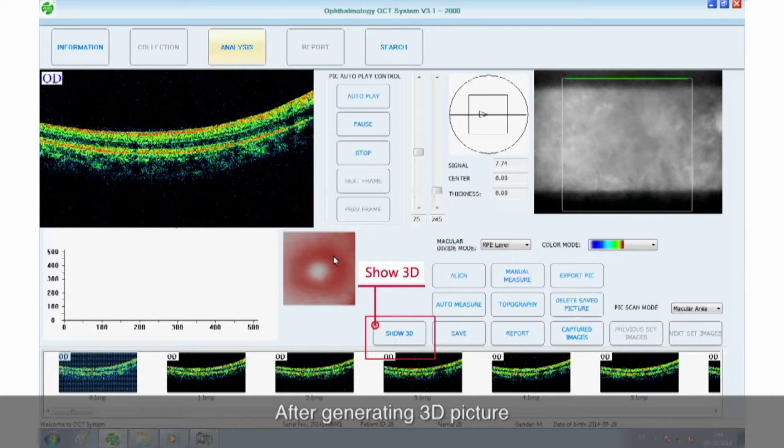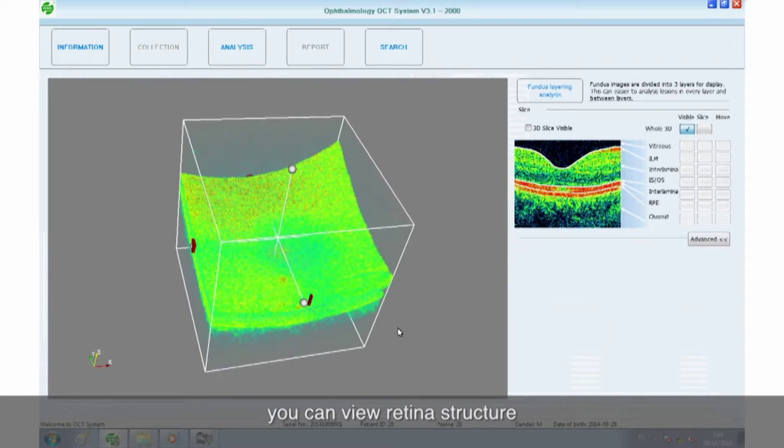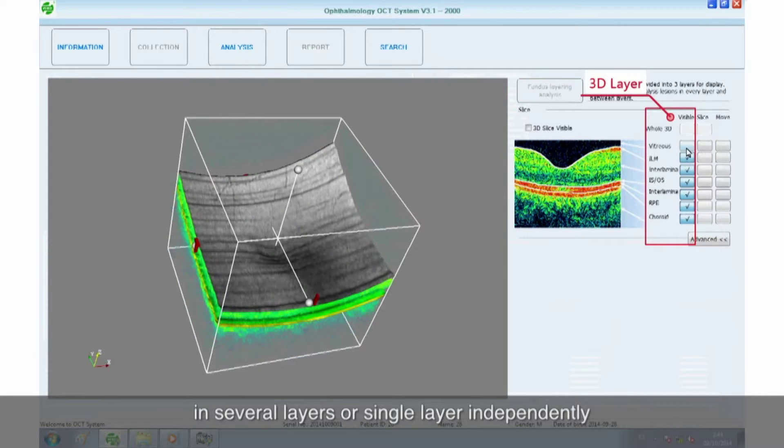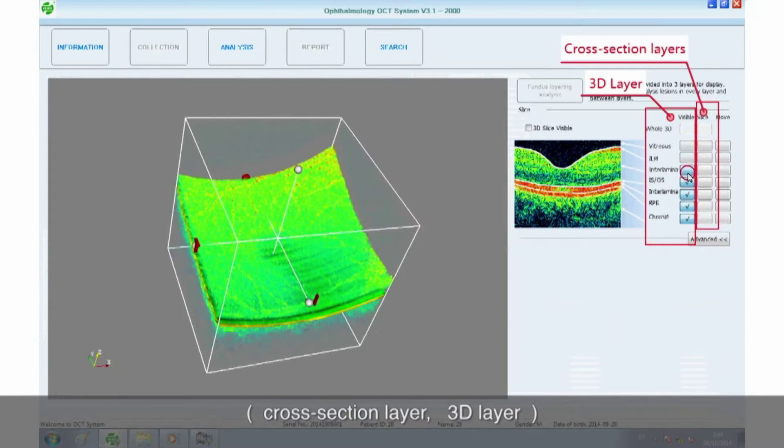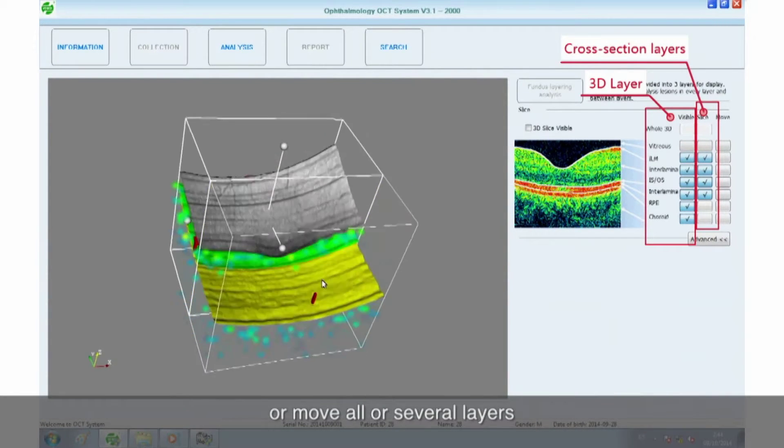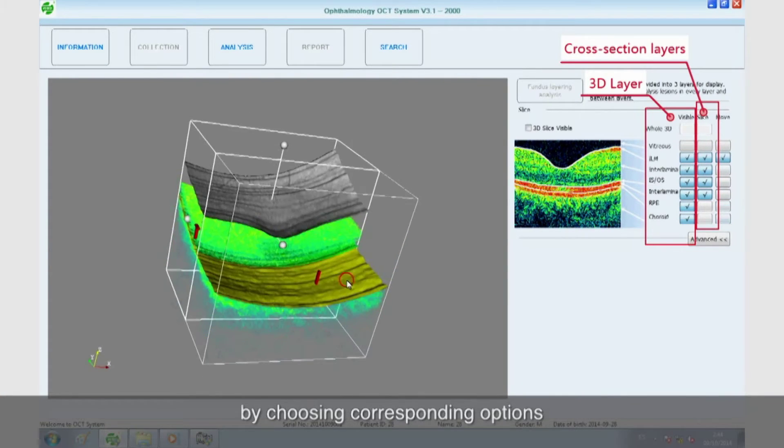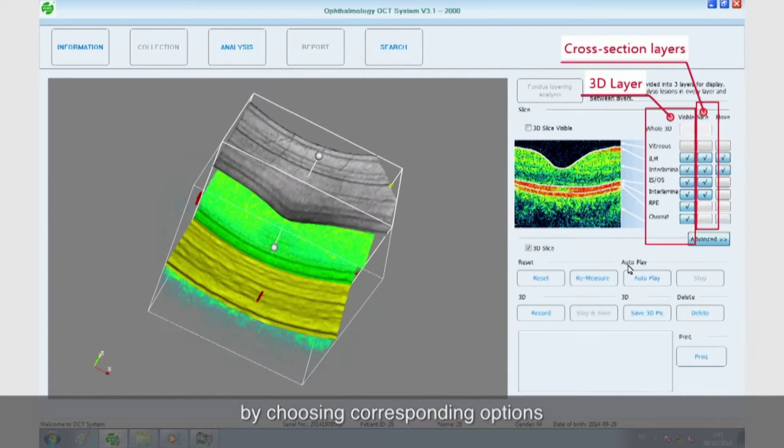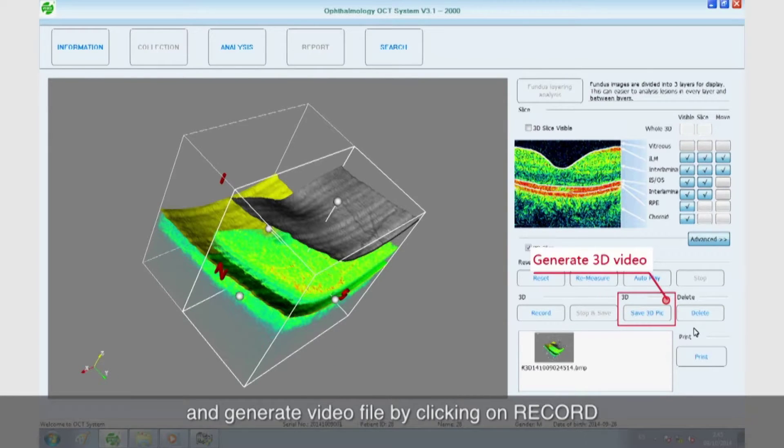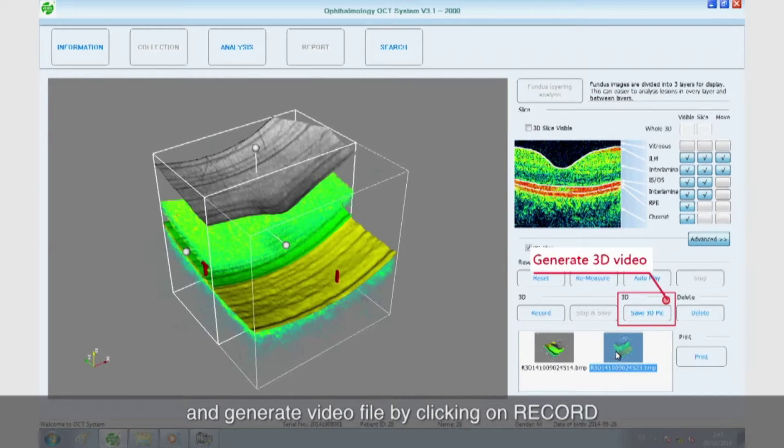After generating 3D picture, you can view retina structure in several layers or single layer independently: cross-section layer, 3D layer. You can also slice up or move all or several layers by choosing corresponding options. In addition, it can save 3D picture and generate video file by clicking on record.